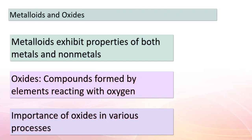Our exploration wouldn't be complete without mentioning metalloids and the fascinating world of oxides. Metalloids exhibit properties that lie between metals and non-metals, granting them versatile characteristics for different applications. Oxides are compounds formed when elements react with oxygen, playing a crucial role in various natural and industrial processes — think of rust on metal surfaces, or the combustion reactions that involve the formation of oxides. Oxides are integral in fields ranging from materials science to environmental studies.